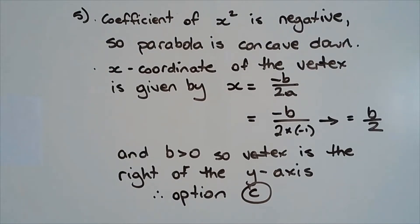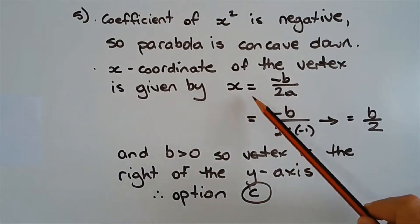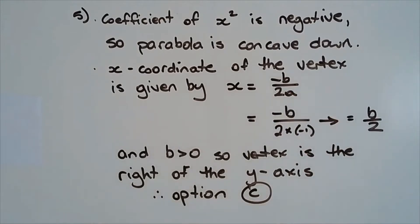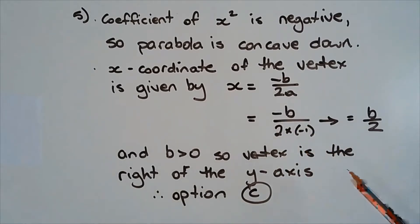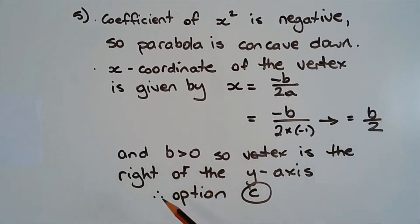Next, we need to determine whether the vertex of the parabola lies to the left or right of the y-axis. Using the formula x equals negative B on 2a: x equals negative B over 2 times negative 1, giving B over 2. But B is greater than zero, so the vertex is to the right of the y-axis. Therefore the answer is option C.